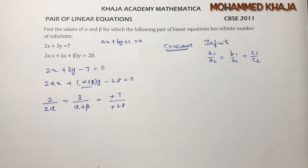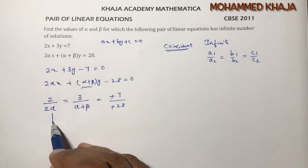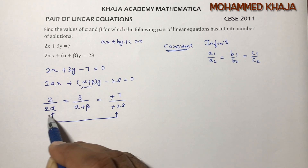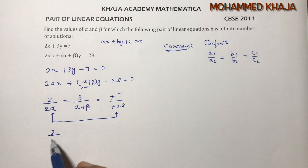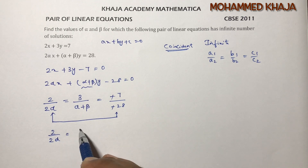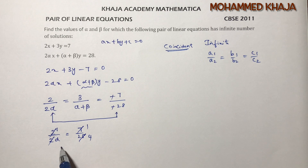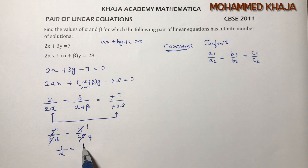The negatives cancel. To find alpha, I'll equate the first ratio with the last constant: 2/(2·alpha) = 7/28. The 2s cancel, giving 1/alpha = 1/4. Cross-multiplying, alpha = 4.